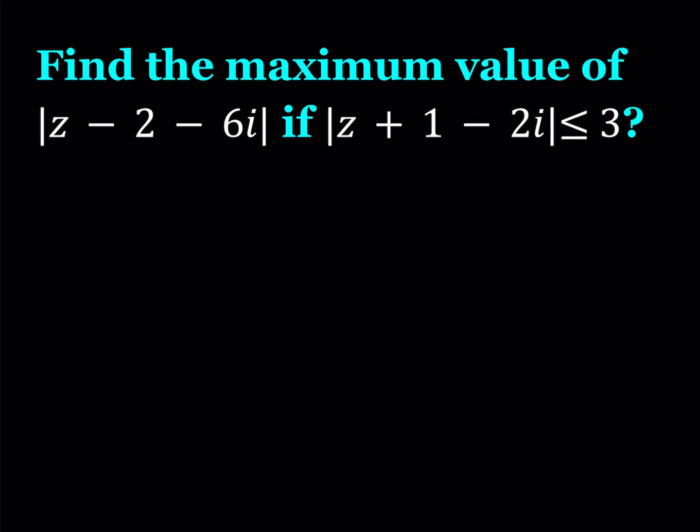We are supposed to find the maximum value of the absolute value of z minus 2 minus 6i, given that the absolute value of z plus 1 minus 2i is less than or equal to 3. Here z represents a complex number and we're going to talk about the definition and see how we can solve this problem.